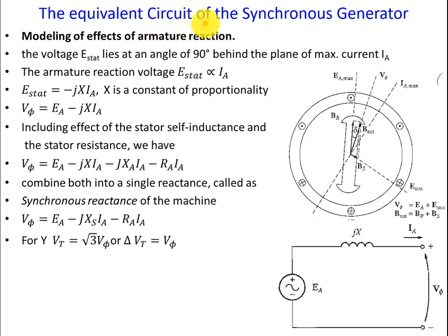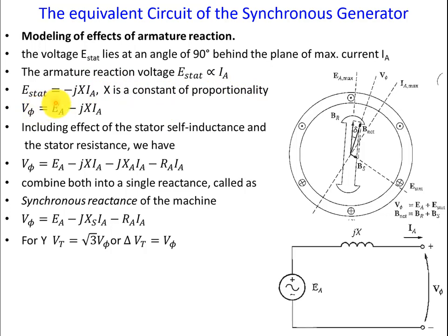Now, what will be the modeling effect of this armature reaction in the equivalent circuit? The voltage E_stator lies at an angle of 90 degrees behind the plane of maximum current IA, and E_stator is proportional to IA. So E_stator = -jX·IA, where X is a constant of proportionality. Therefore V_phase = EA - jX·IA. Including the effect of stator self-inductance and stator resistance: V_phase = EA - jX·IA - jXA·IA - RA·IA. We lump the reactance terms together as XS, known as the synchronous reactance, so V_phase = EA - jXS·IA - RA·IA.